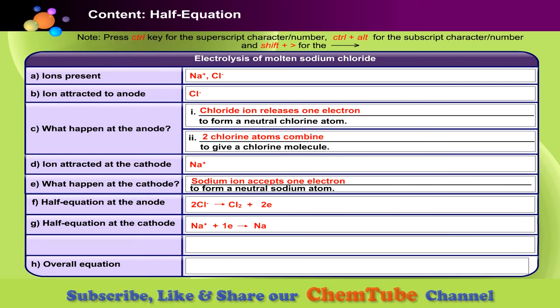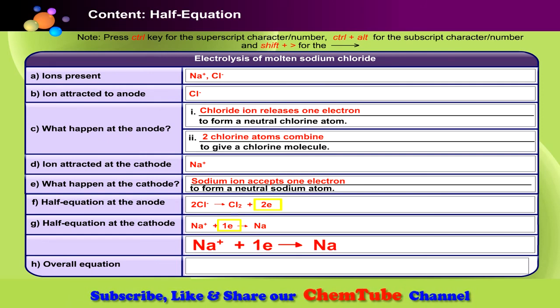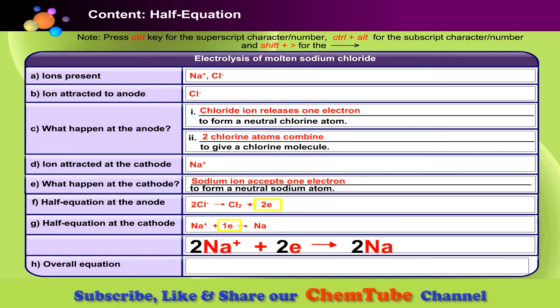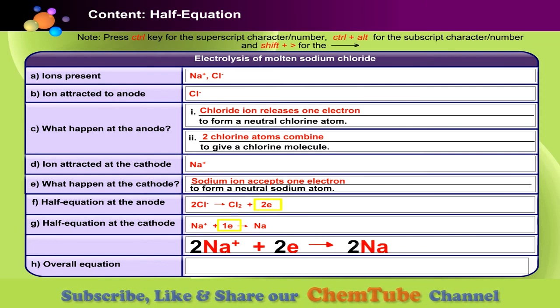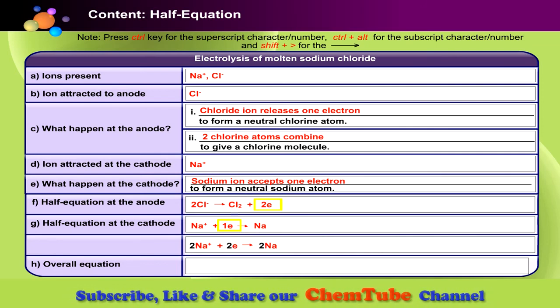Let's combine both equations. Before the equation can be combined, do you remember what must you do first? Yes, you must make sure that the number of electrons on both half-equations must be the same. Electrons in this equation is not balanced. This is how you balance it. Combining both half-equations will give us overall equation. Type in the overall equation. Press enter when you are done.